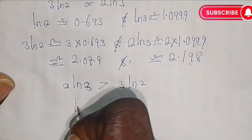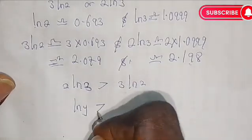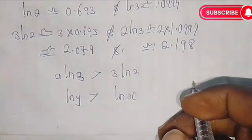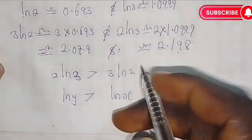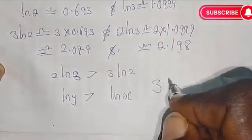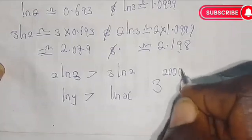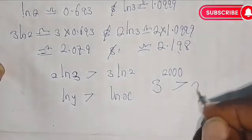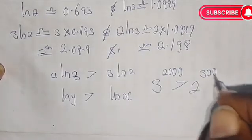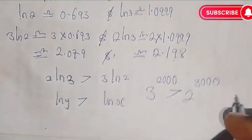The natural log of y is greater than the natural log of x. What this means is that 3 raised to the power of 2000 is greater than 2 raised to the power of 3000.